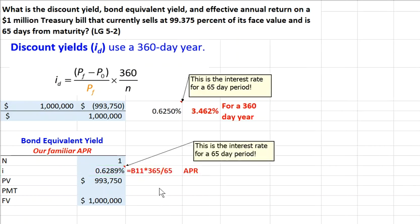So how do we get our APR? We simply take that 0.6289% over a two-month period, and we multiply it by 365 and divide by 65, because there are basically six of those periods in a year. So that's our simple, familiar APR calculated with your financial calculator instead of the formula given in the textbook or PowerPoint slides.